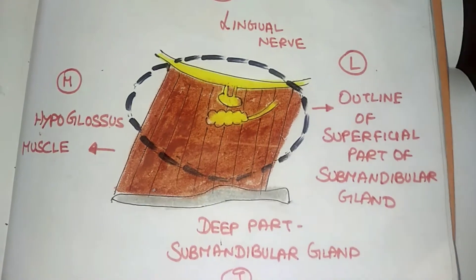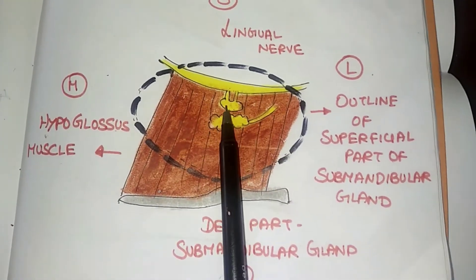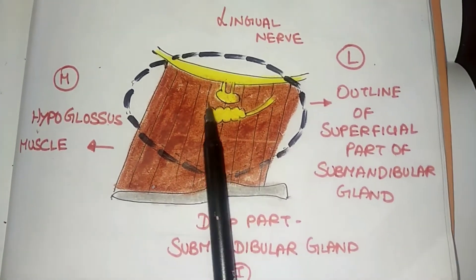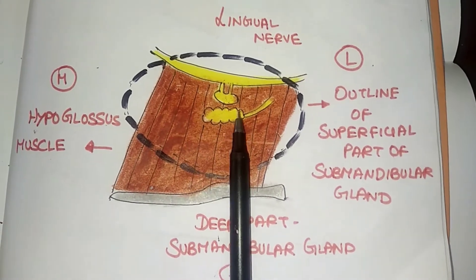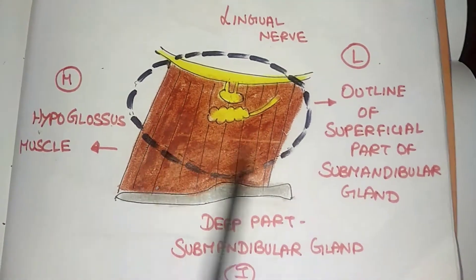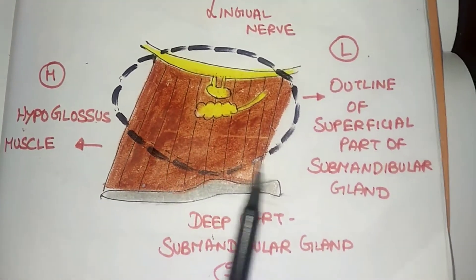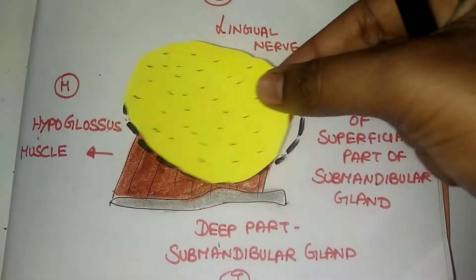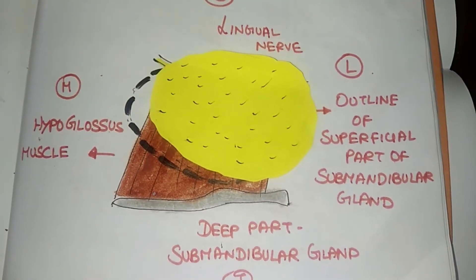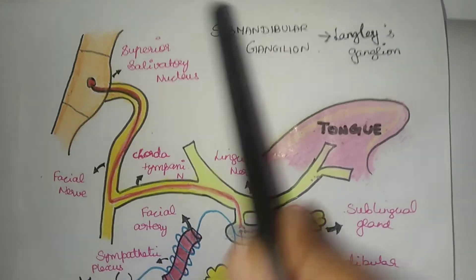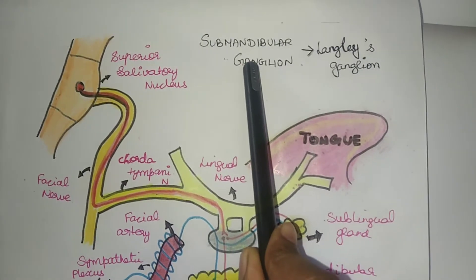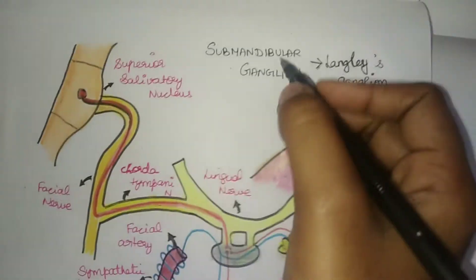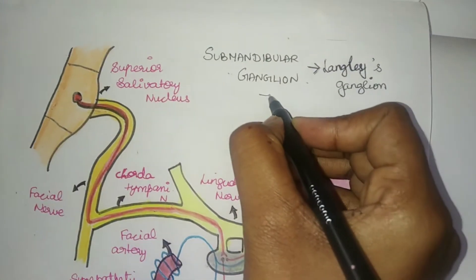So to summarize: above is the lingual nerve, below is the deep part of the submandibular gland, medial relation is the hyoglossus muscle, and the lateral relation is the superficial part of the submandibular gland. The roots of the submandibular ganglion are the most important part. It is a parasympathetic ganglion with a sympathetic root and a sensory root.